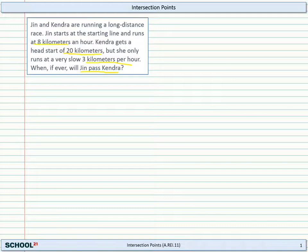Let's take a look at what we can put into function notation here. What we're really asking for when someone passes another person is when their distances are the same. So let's first think of Jin's distance. We're going to make a function, J of T for Jin. And T, of course, is time. What we know about Jin is that she starts at the starting line and runs 8 kilometers every hour. So her distance is 8T.